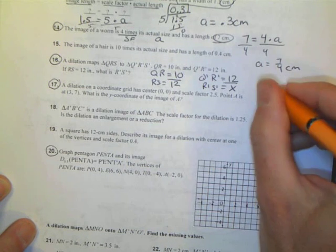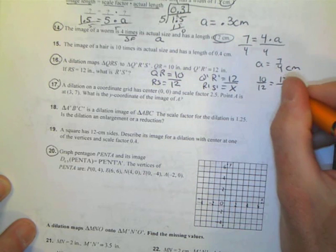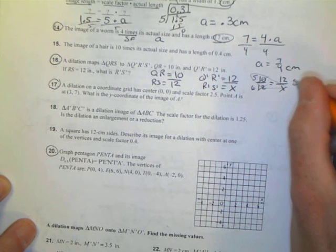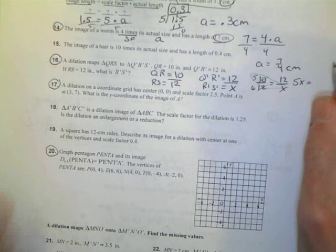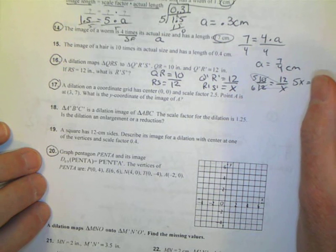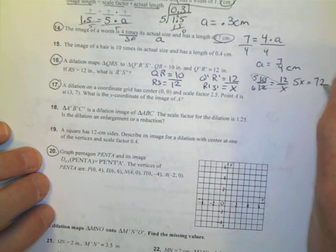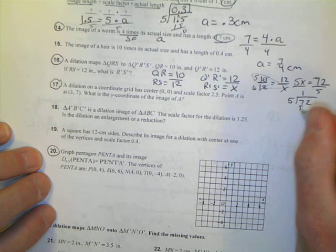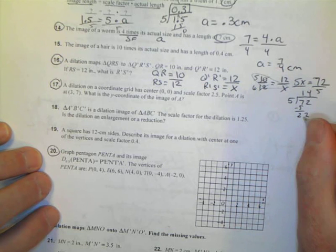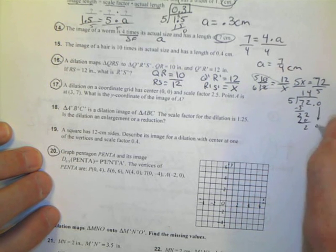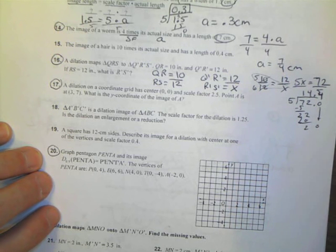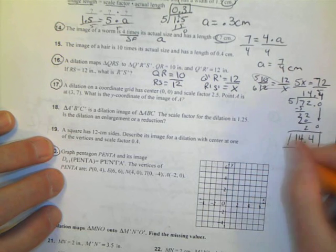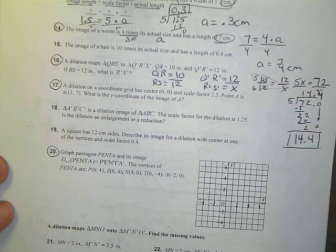What I have is 10 over 12 equal to my dilation 12 over X. If I reduce this first, I have 5 and 6. I can cross multiply and end up with 5X equals 6 times 12, which is 72. To solve for X, I divide both sides by 5. 5 goes into 72 one time, bring down the 2, 5 goes into 22 four times. So in this case, the value of R prime S prime is 14.4. All I was doing was taking the parts and setting it up as a proportion.